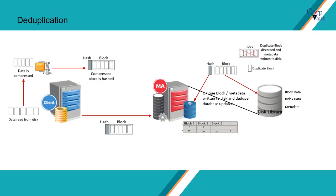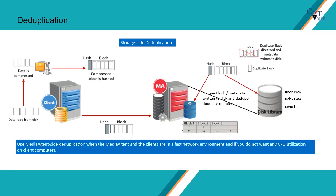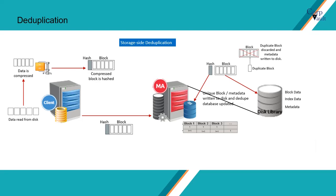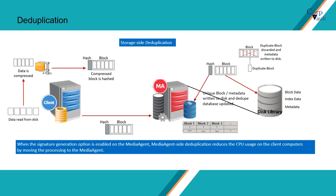The deduplication implementation — in other words, the signature generation module — can be configured either on the client or on the media agent. If it is configured on the media agent, it is called storage-side deduplication. Use media agent-side deduplication when the media agent and the clients are in a fast network environment and if you do not want any CPU utilization on client computers. When the signature generation option is enabled on the media agent, media agent-side deduplication reduces the CPU usage on the client computers by moving the processing to the media agent.